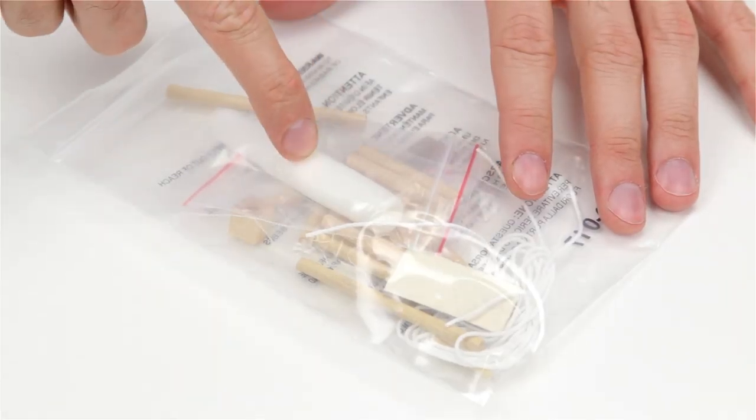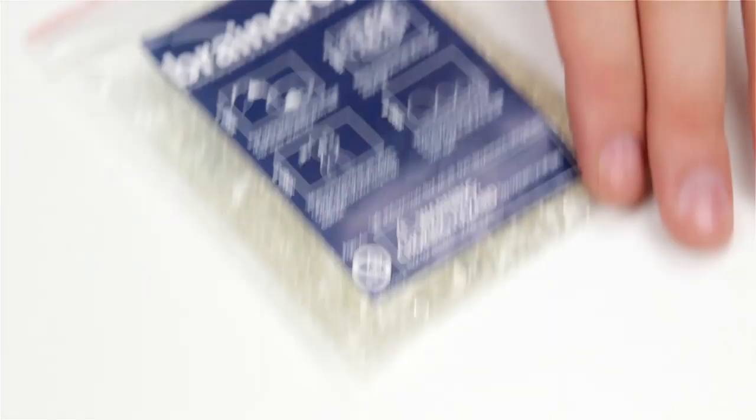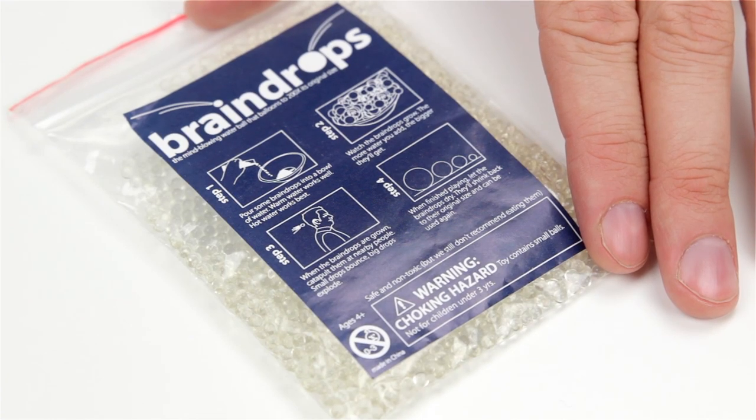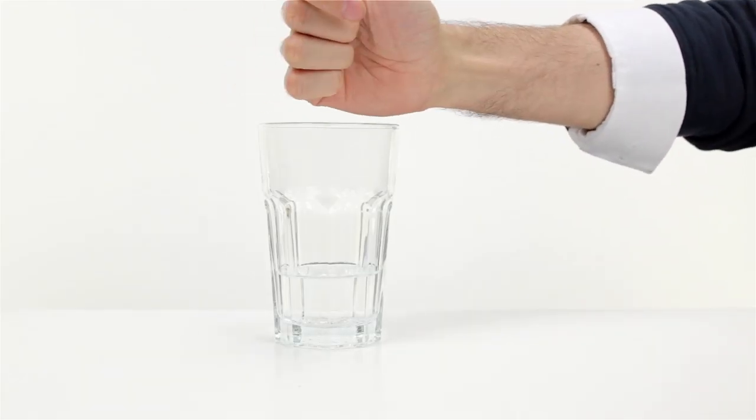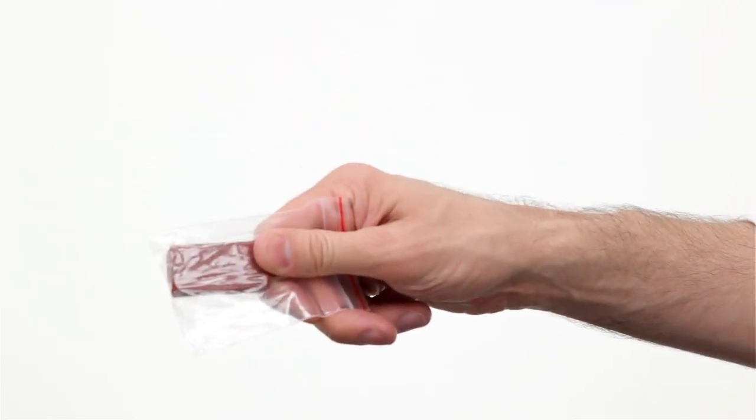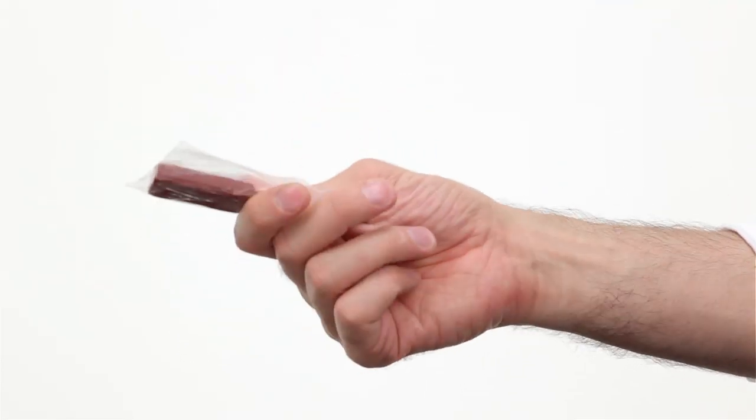It even includes glue, sandpaper, string, and even braindrops that grow to 200 times their size when soaked in water, and even clay to make authentic clay ammunition.